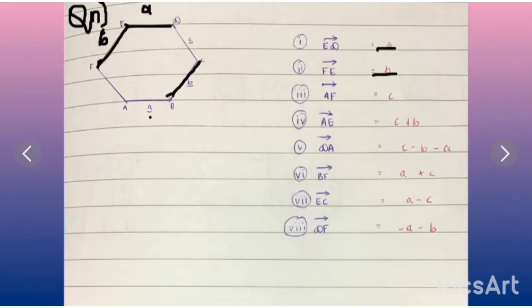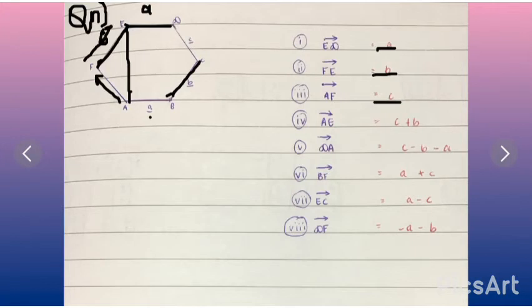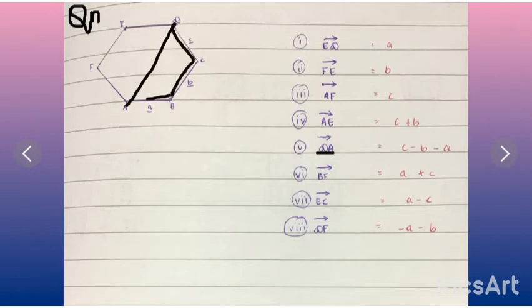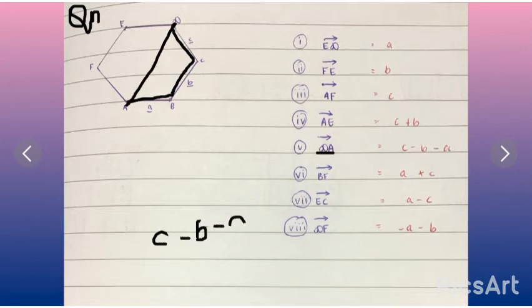Then A to E — so A to E is this part. For going from A to E, we have to go A to F and F to E, which is c and b here. So it can be c plus b. Now we need to find D to A. So D to A is this part. For that, D to C will be c, and C to B will be minus b — it's going the opposite direction. And B to A is also going the opposite direction, so it is minus a. So this is minus c minus b minus a.